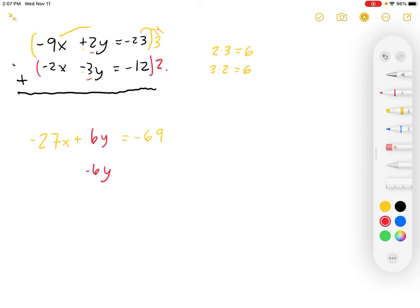We got to do the same thing with the next row. Negative 4x minus 6y, and negative 24.